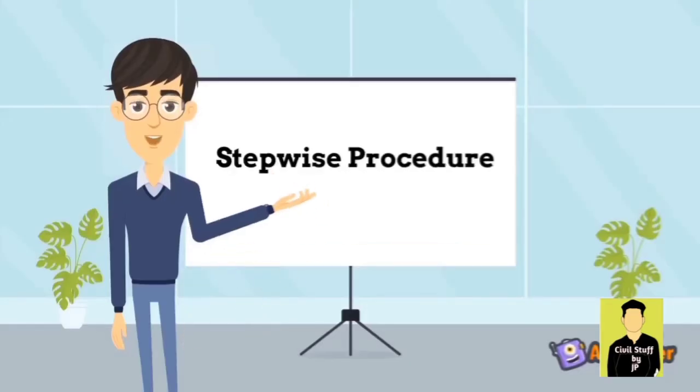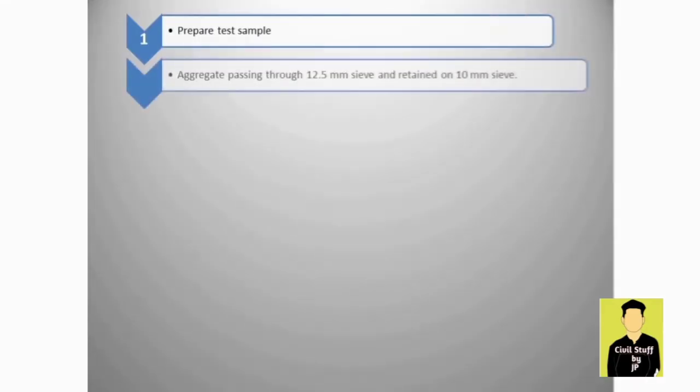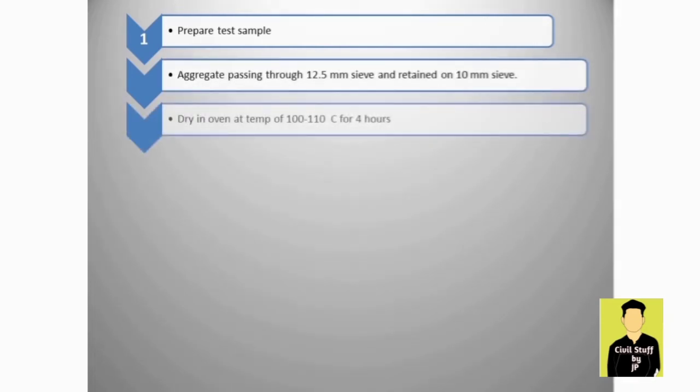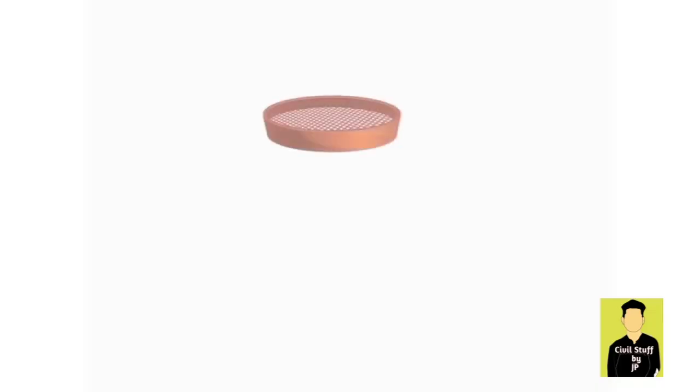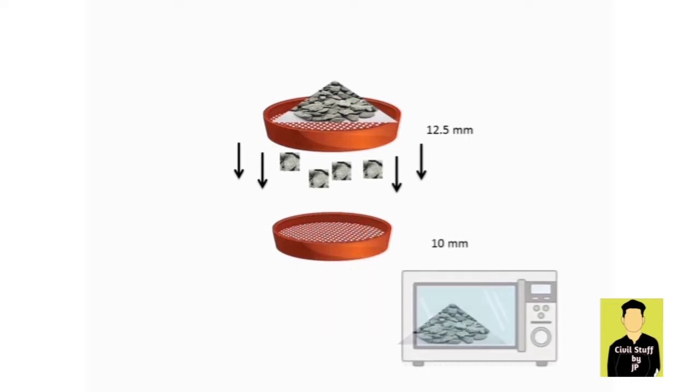Now let's see the stepwise procedure. Take aggregates passing through 12.5mm sieve and retained on 10mm sieve. Dry it in oven at temperature of 100 to 110 degrees Celsius for 4 hours.